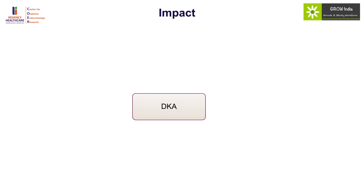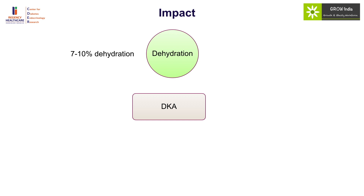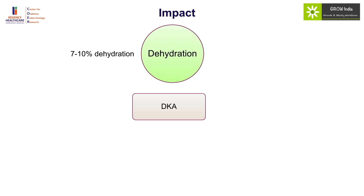The major impact of DKA is increased production of ketones causing ketoacidosis and urinary loss of water and electrolytes. Dehydration is a major presenting feature and is approximately 7 to 10 percent. However, because children with DKA are quite sick with acidotic breathing, the tongue becomes dry and there is a tendency to overestimate dehydration. This has adverse implications, as giving excessive fluids is a major risk factor for cerebral edema. As a rule of thumb, one should always assume dehydration to be one step lower than what is assessed clinically.